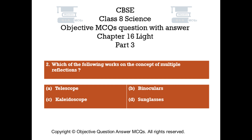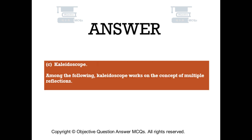Question number 2: Which of the following works on the concept of multiple reflections? Option A: Telescope, Option B: Binoculars, Option C: Kaleidoscope, Option D: Sunglasses. The right answer is Option C: Kaleidoscope. Among the following, kaleidoscope works on the concept of multiple reflections.